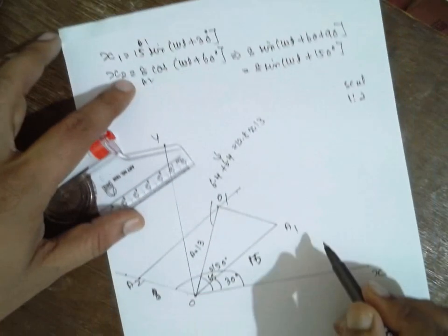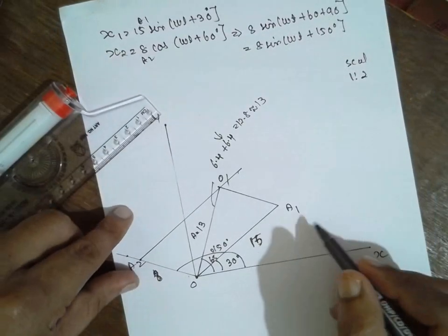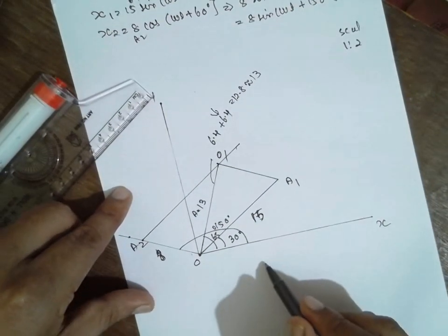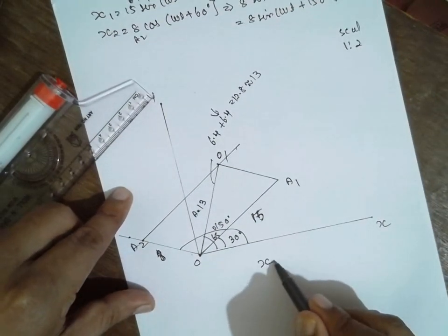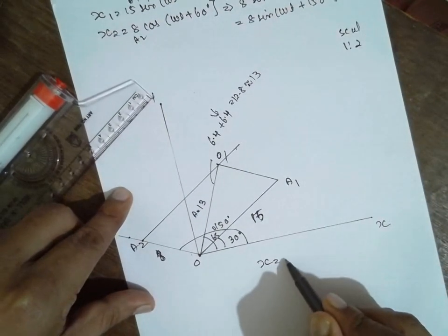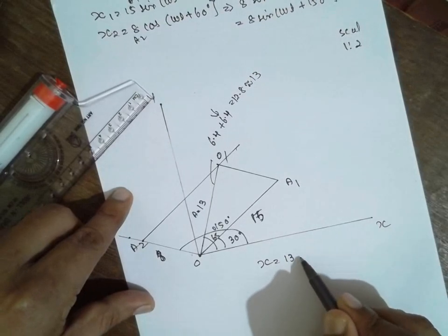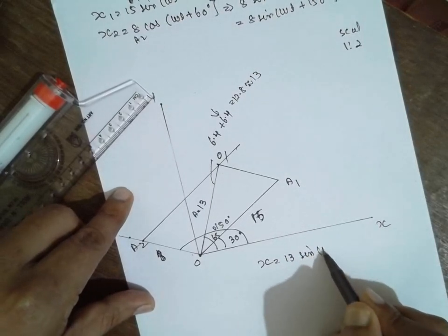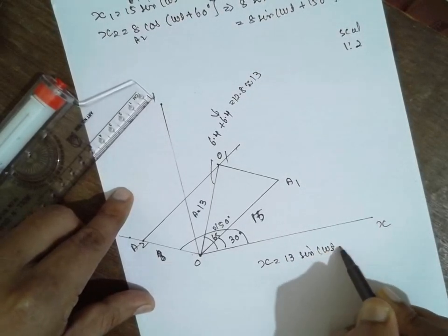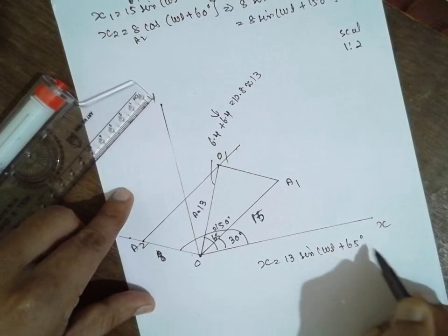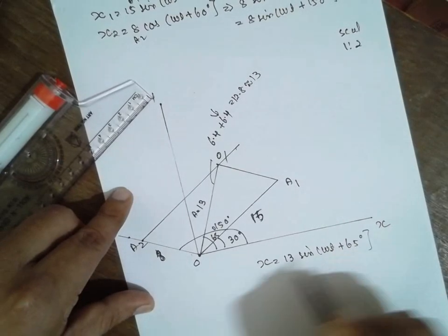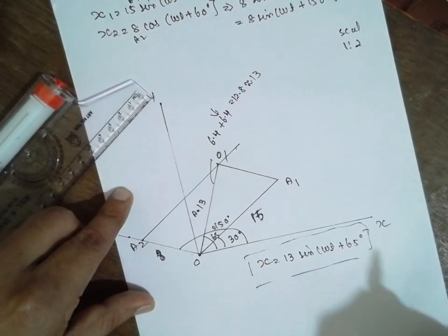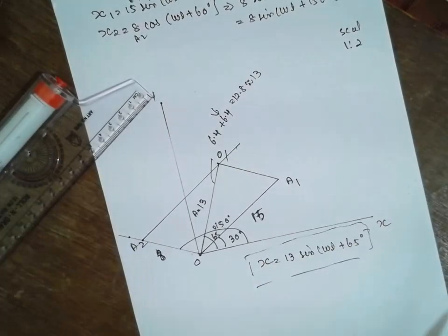The expression for the resultant is x = 13 sin(ωt + 65°). That is the answer. You can solve graphically or analytically — both give the same result.